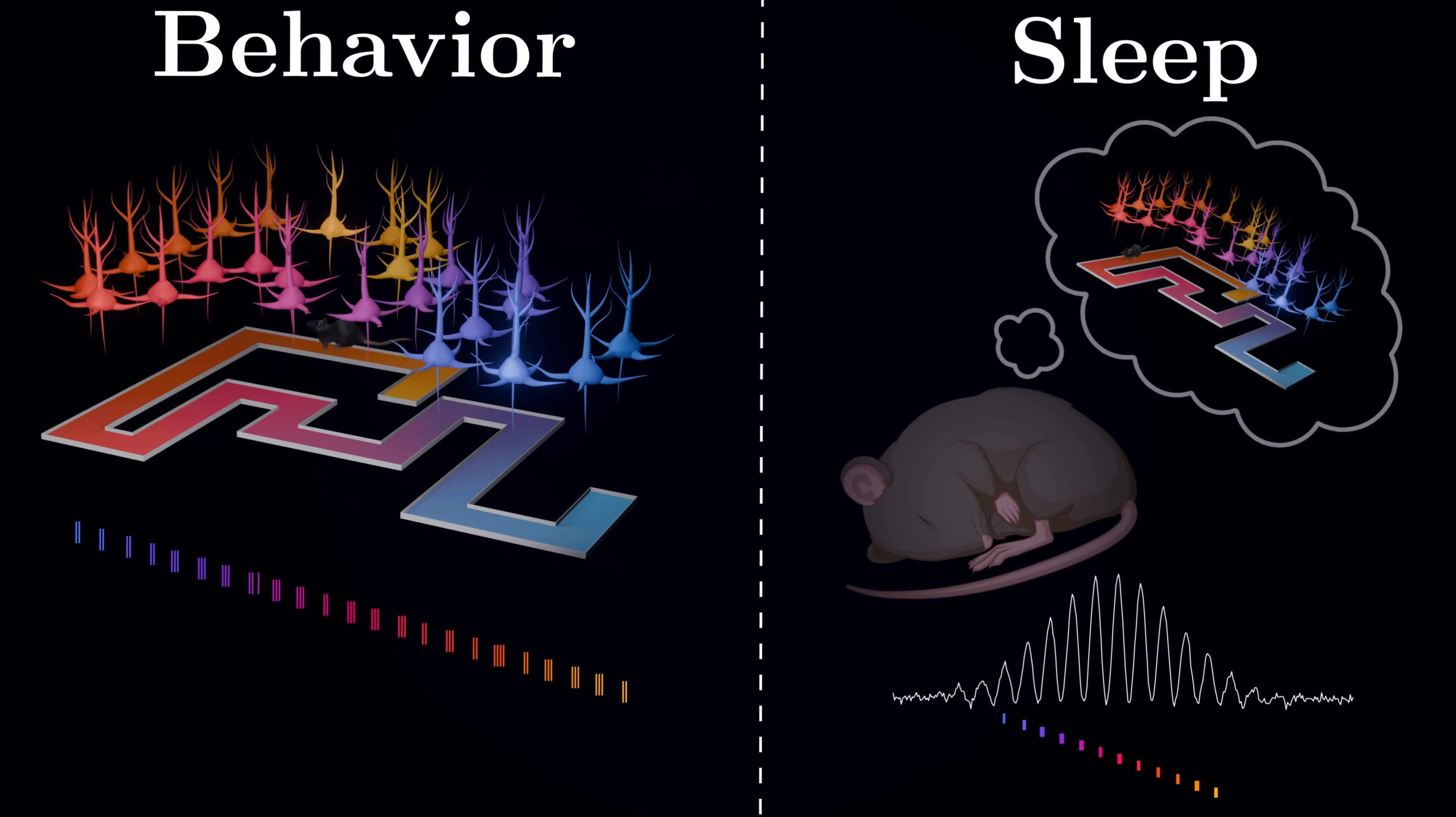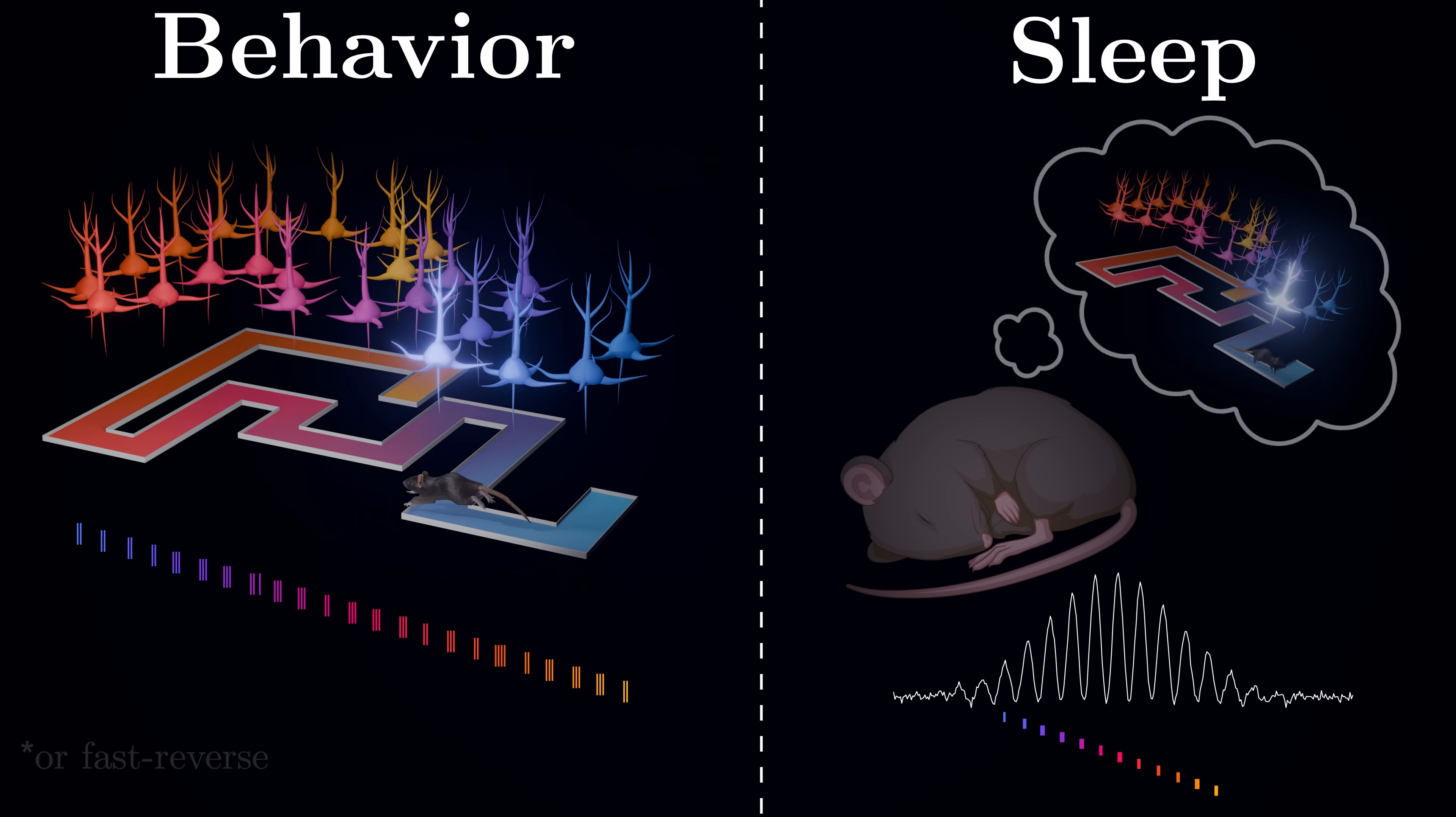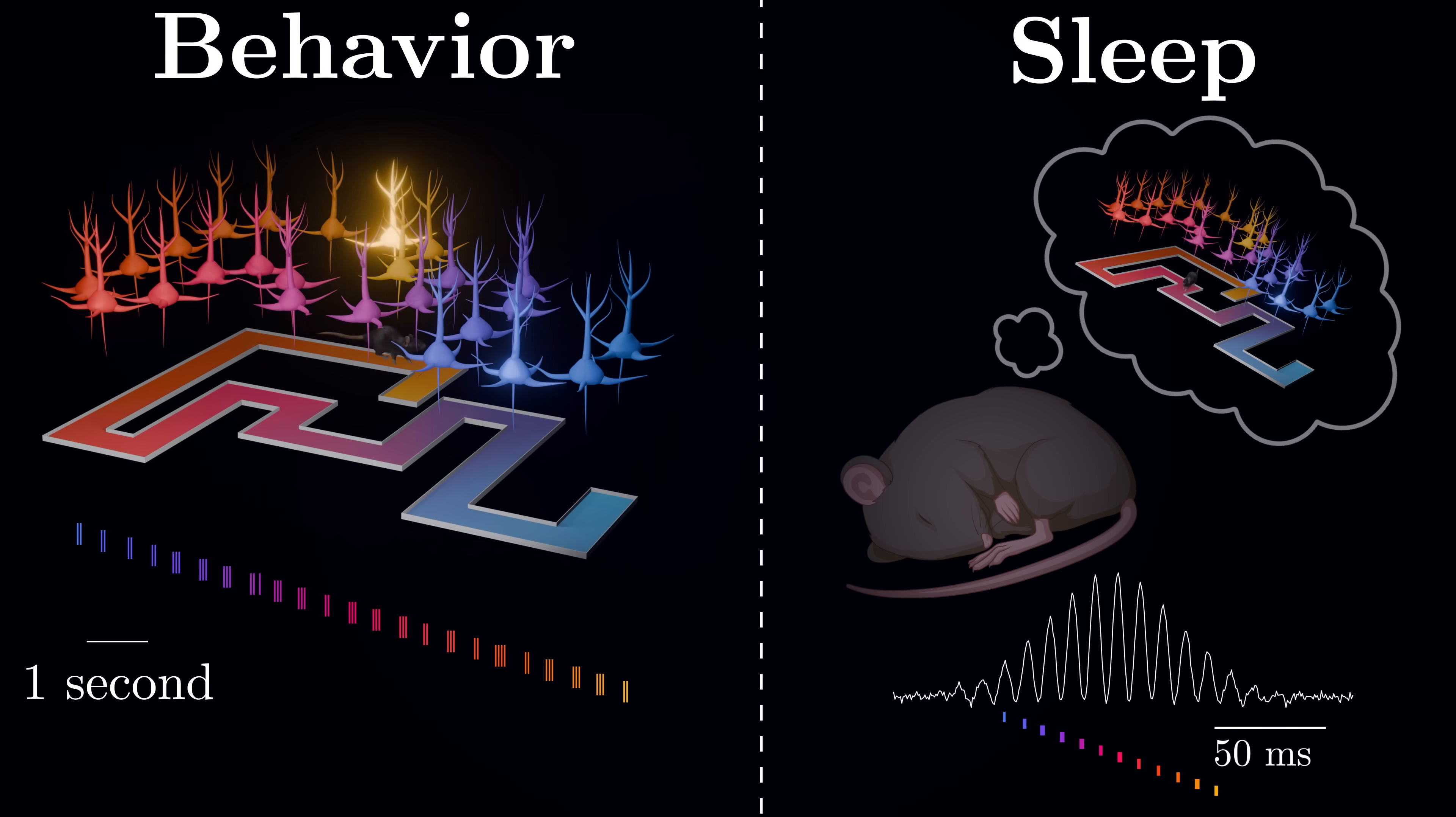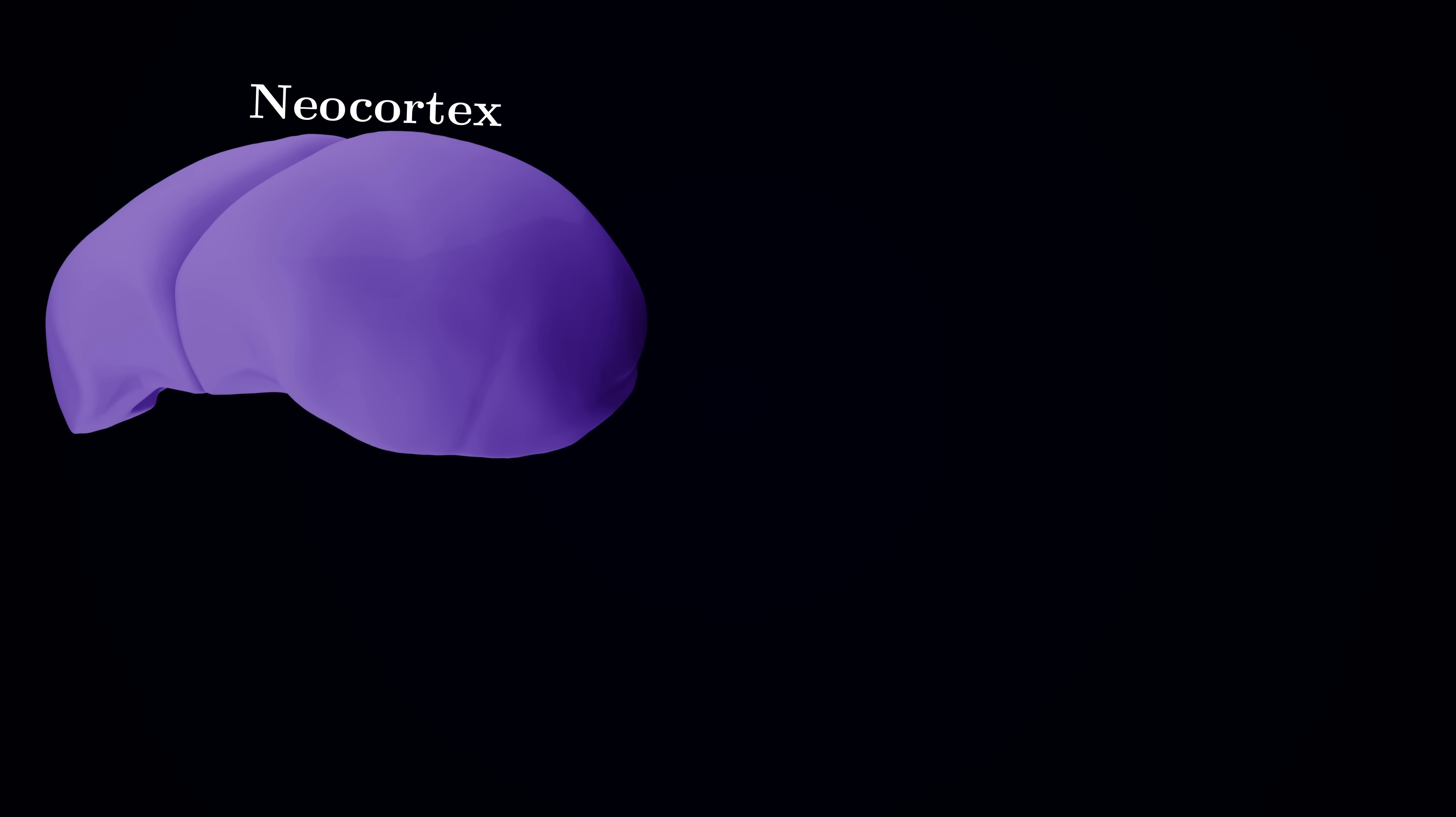Apart from competition, such neural replays have another important feature. They occur at a high speed – like watching your day's experiences on fast forward at the neural level. What originally took seconds during behavior gets compressed into around 100 milliseconds during sleep. This temporal compression turns out to be absolutely crucial for memory storage. You see, during sleep, the neocortex, the outer layer of the brain, enters a special state where it becomes receptive to signals from the hippocampus.